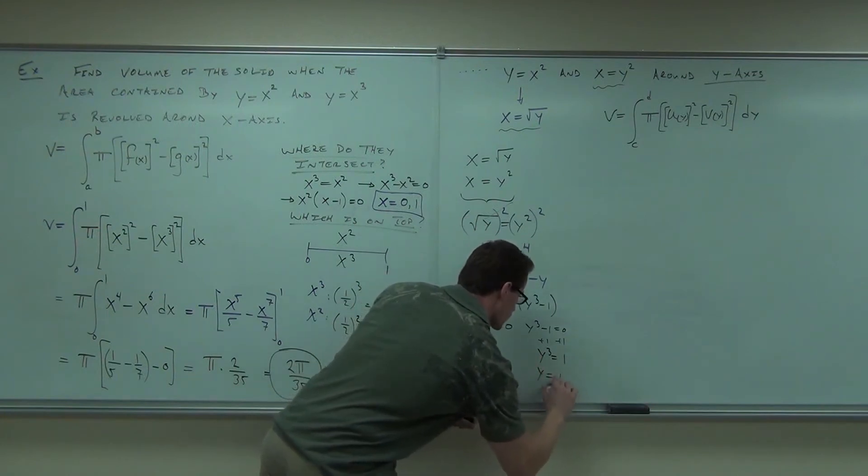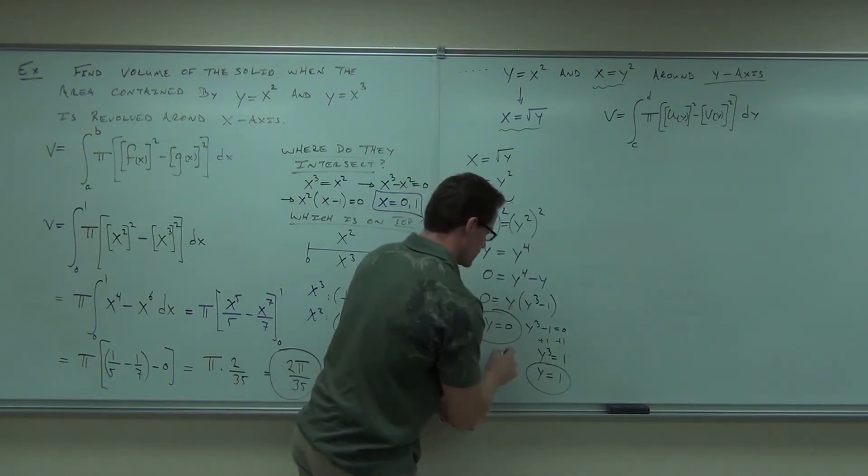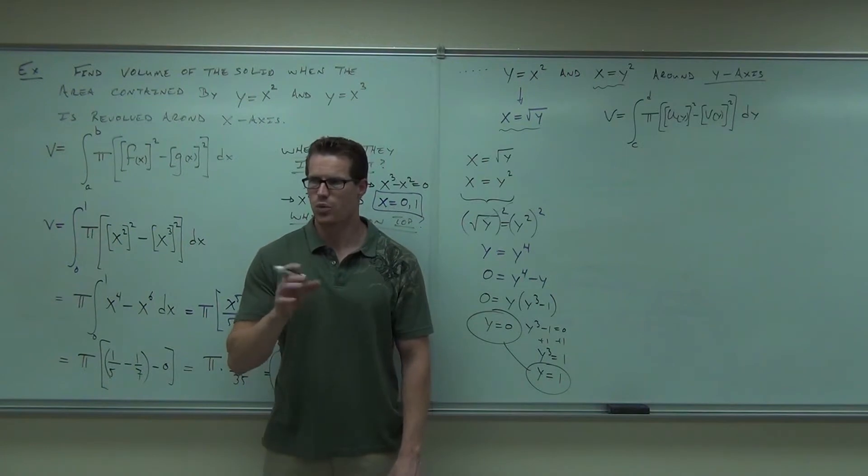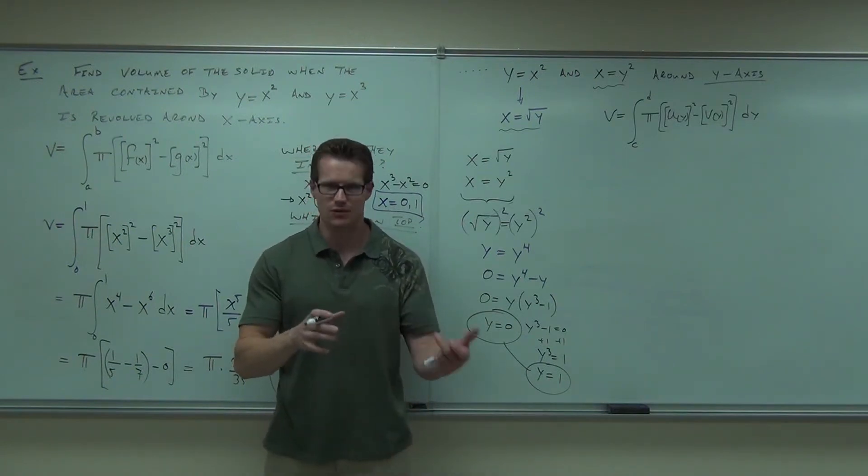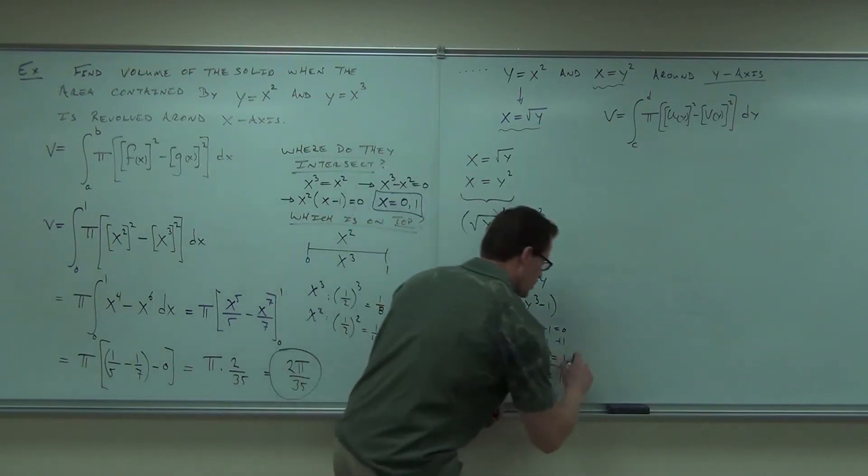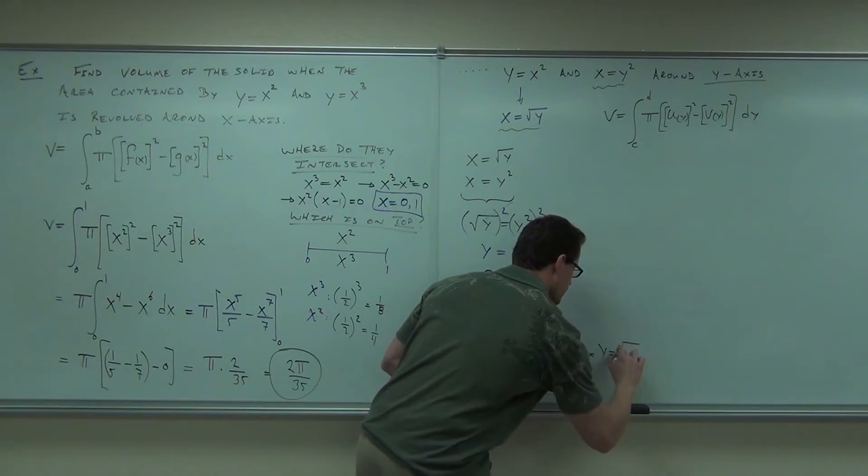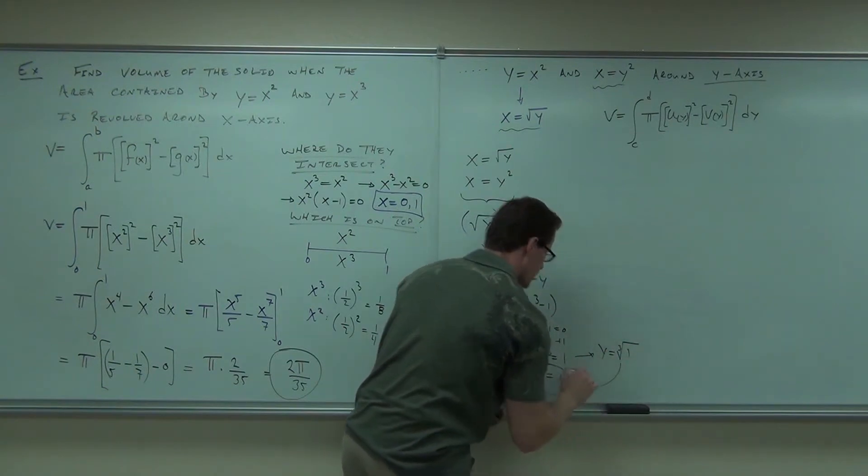The only way this is working is if y equals one. That's the only way it happens with a cube. Not negative one, because it's not a square. It's a cube. So the only way you're getting one from cubing a number is with positive one. Negative one cubed is negative one. That's the only thing that would work. So if you want to show it explicitly, you'd have y equals the cube root of one, and that is one.